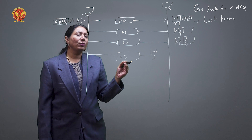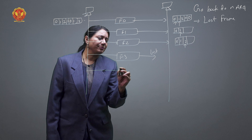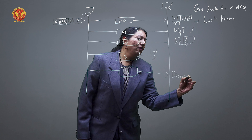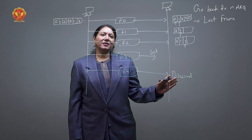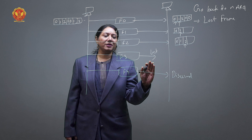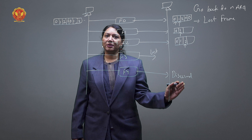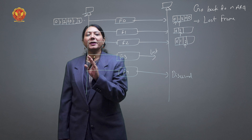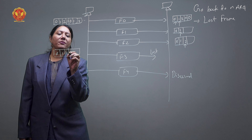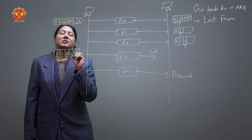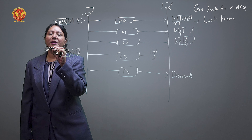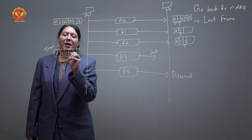The receiver was expecting frame number 3, but it received frame 4 instead — so it discards frame 4. The receiver has discarded it. Now what is happening at the sender side? As soon as we transmit a frame, a timer starts — we want to observe the timer function here. So the timer starts on the third frame, since we are looking at the lost frame case.